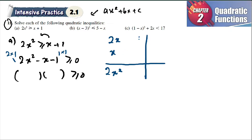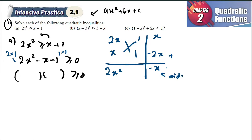You see here, 1 is actually 1 times 1. So when you cross, x times 1 is x, and 2x times 1 is 2x. The middle one here is negative — negative 1, right? So x minus 2x gives you negative x. You have to add these to get the middle term.